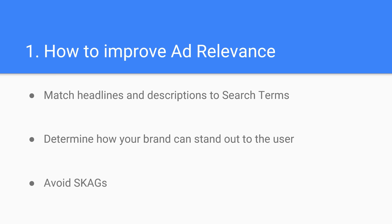While you should focus on including relevant keywords in your copy, don't get this confused with keyword stuffing. Gone are the days where you could just have SKAGs — single keyword ad groups. It used to be really easy to have higher ad relevance with SKAGs because you were almost always matching a specific search term with your headline. With Google's expansion of exact match types, advertisers have to switch away from SKAGs and focus on the total picture, otherwise you could be limiting yourself.